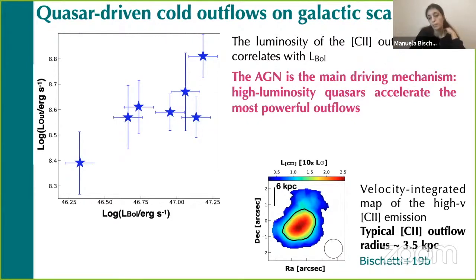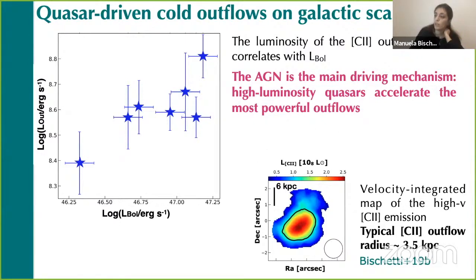We also found that the luminosity of these broad wings correlates with that of the quasar, essentially identifying the AGN as the main driving mechanism of the high-luminosity CII emission. This is in agreement with what is found at lower redshift — that high-luminosity quasars accelerate the most powerful outflows. By stacking the ALMA data cubes, it was also possible to derive the average extent of these cold outflows. The typical radius of the CII outflow is about 3 kiloparsecs, so these winds extend on galactic scales.